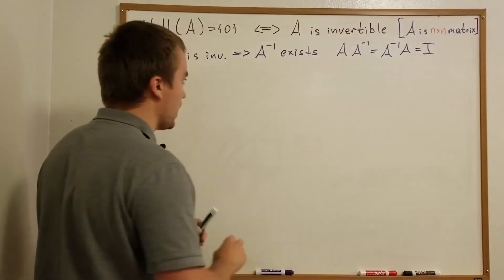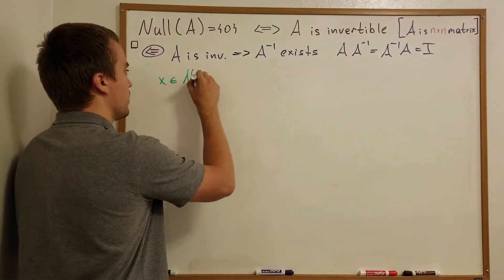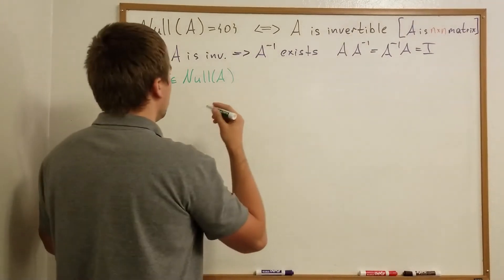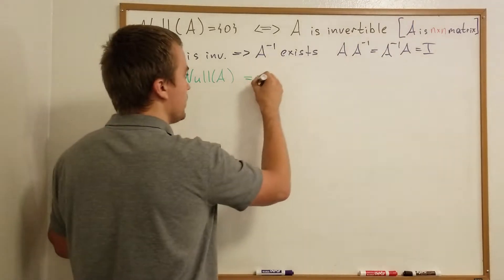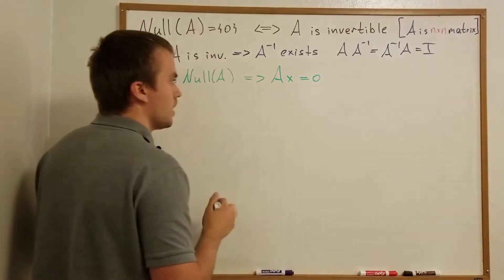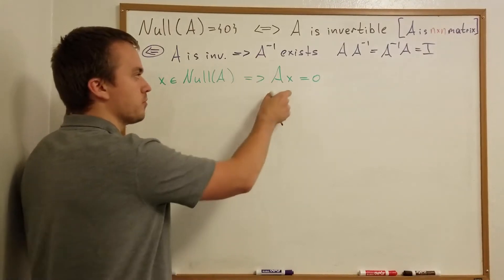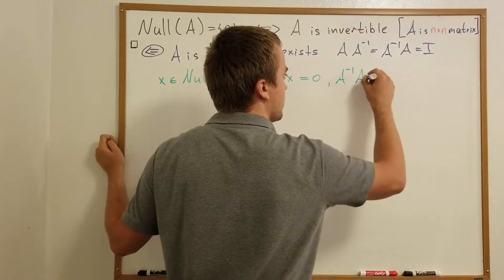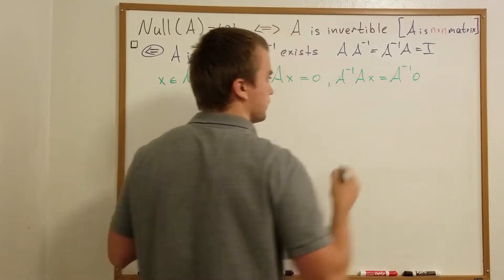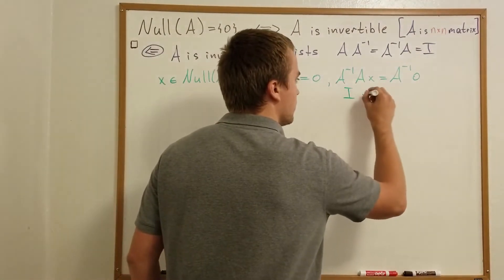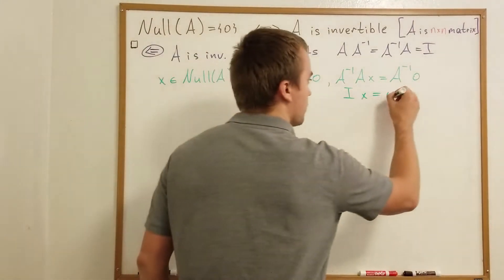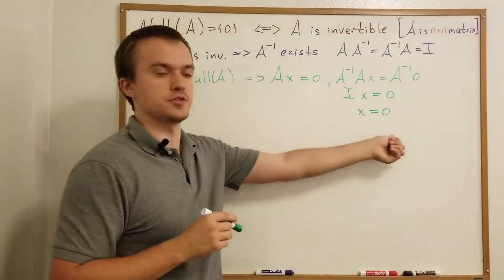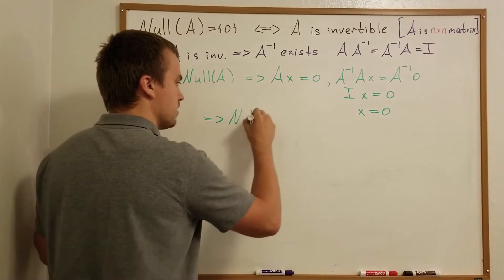There is one really nice proof technique we can use. Let's take any element X in null(A) and I want to show that it's always going to be equal to zero. By definition of null(A), A times X equals zero. But A inverse exists, so we can multiply both sides on the left by A inverse. We get A inverse A X equals A inverse times zero, which gives identity times X equals zero, so X equals zero. Therefore null(A) is just the zero vector.